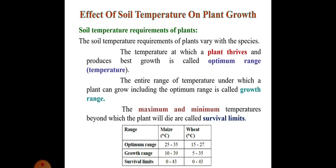Now we will discuss the effect of soil temperature on plant growth. Soil temperature requirement of plants: The soil temperature requirement of plants vary with the species. The temperature at which a plant thrives and produces best growth is called optimum range. The entire range of temperature under which a plant can grow including the optimum range is called growth range. And the maximum and minimum temperatures beyond which the plant will die are called survival limits.